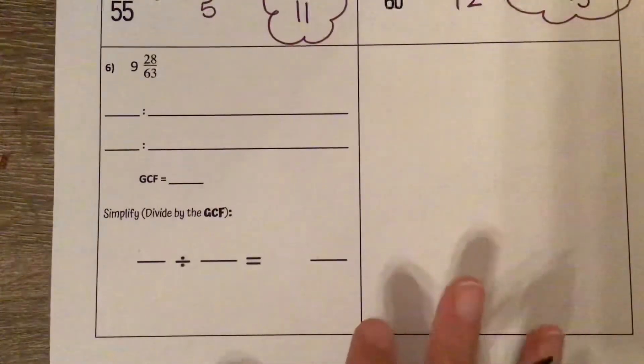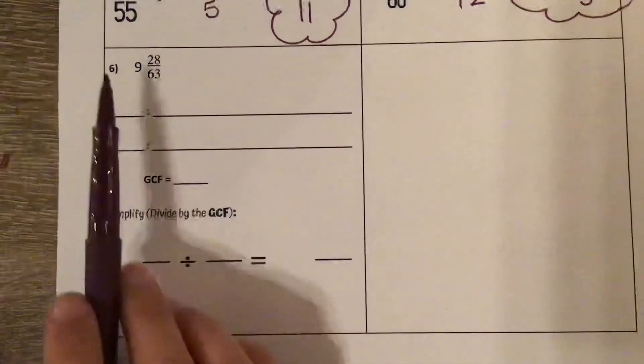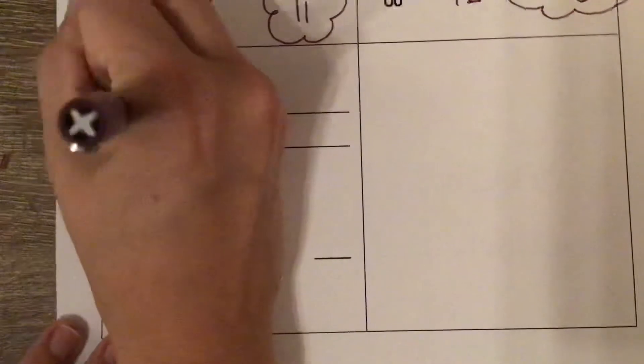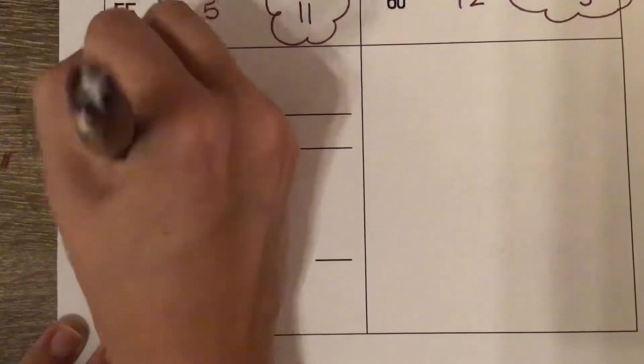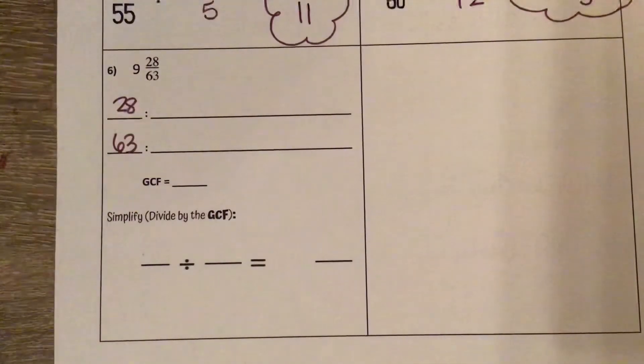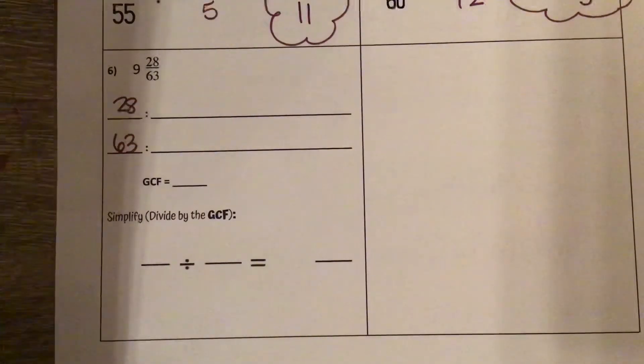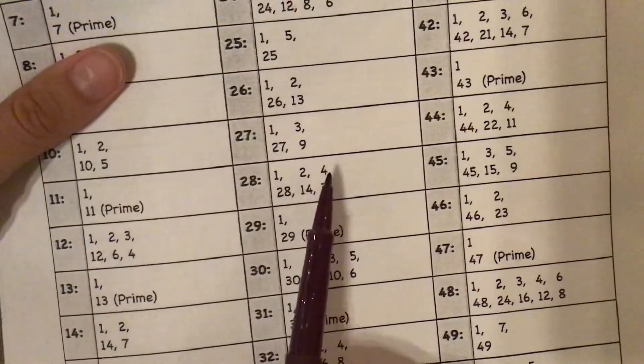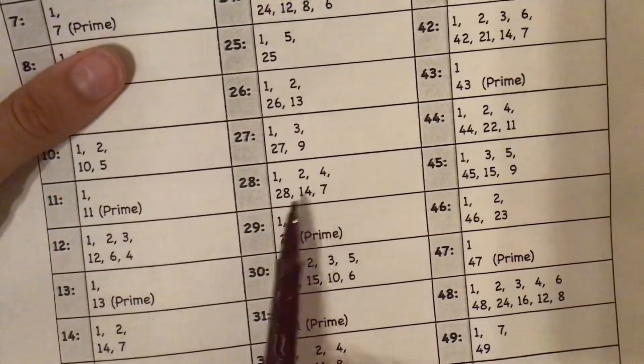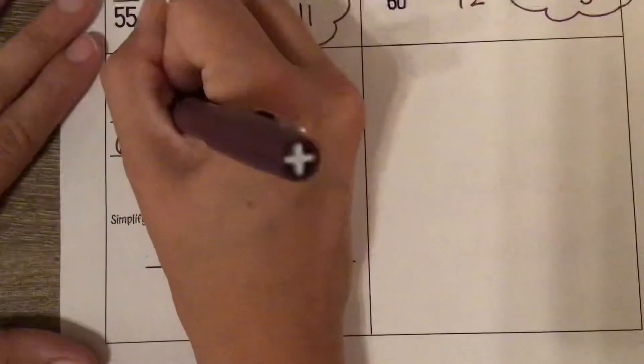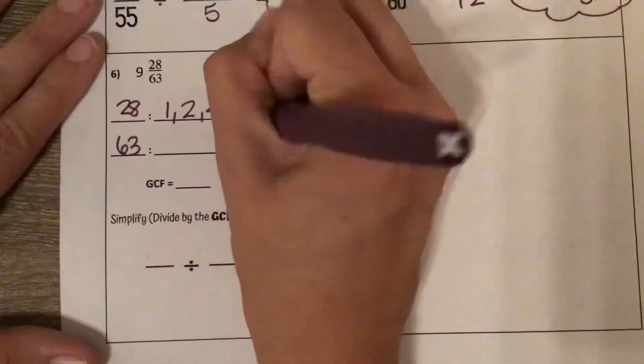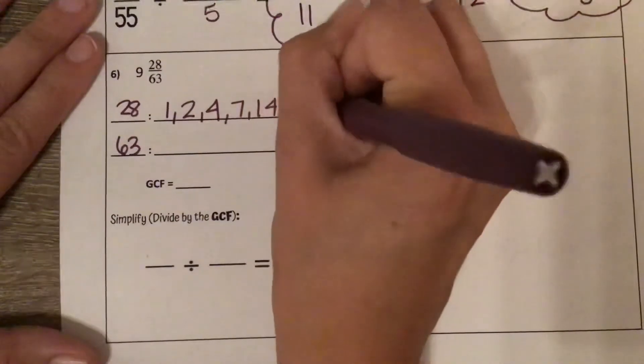Now let's try it one more time where you have to list out the factors. So 28 and 63 are the numbers in the fraction. Let's find our factors of 28. So I see them right here: 1, 2, 4, 7, 14, 28.